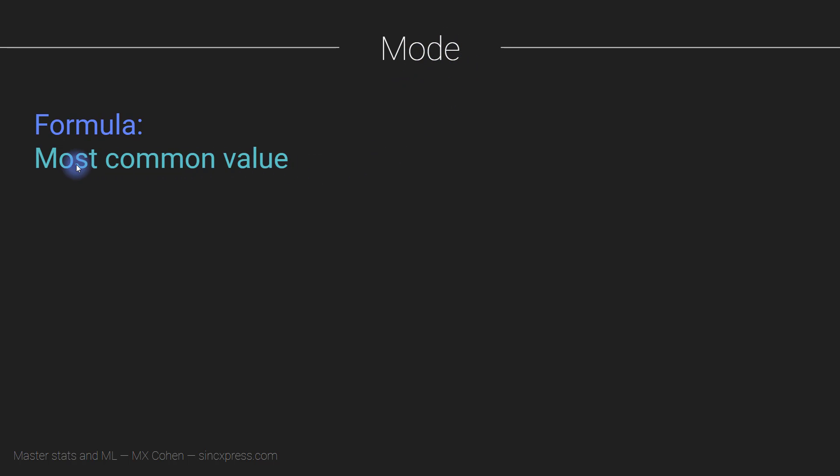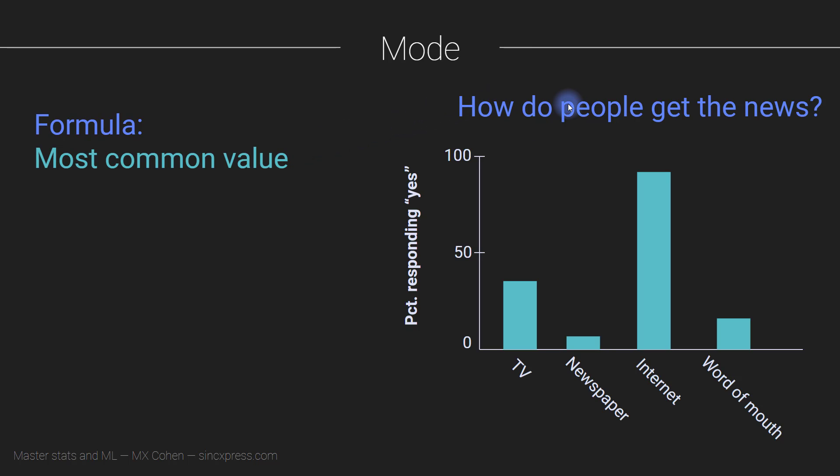Going back to the example I gave earlier about how people get the news from different media sources, the mode of this distribution is simply whichever value has the most data points. In this case, that's the internet. We can say most people get their news from the internet—the internet is the modal source of news.